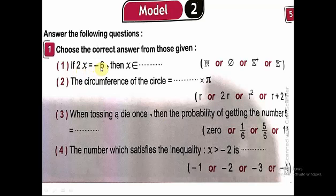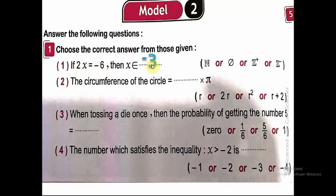Number 1: if 2x equals negative 6, then x belongs to — I know that when we have a variable multiplied by a number, I divide by this number. So I'll divide 2x by 2 and divide negative 6 by 2. So 2x divided by 2 equals x, and x equals negative 6 divided by 2, which equals negative 3.